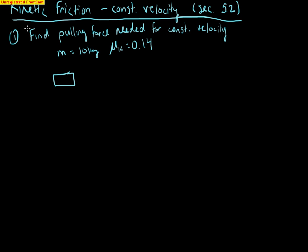So for our first example we're going to find what is the pulling force needed to maintain a constant velocity if we have an object that has a mass of 10 kilograms and the coefficient of kinetic friction is 0.14. So here let's say this is a sled and we're pulling across some snow. So that's why this coefficient is so low because that would be a fairly slippery surface and not much friction.